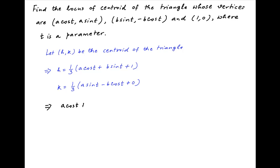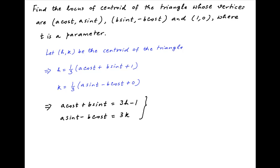We can therefore write: a·cos(t) + b·sin(t) = 3h − 1, and a·sin(t) − b·cos(t) = 3k. Now our goal is to eliminate t from these two equations, and that can be achieved by squaring and adding the two equations.